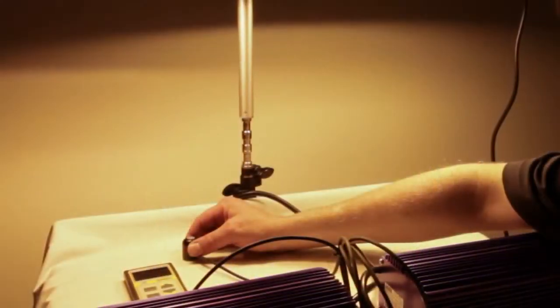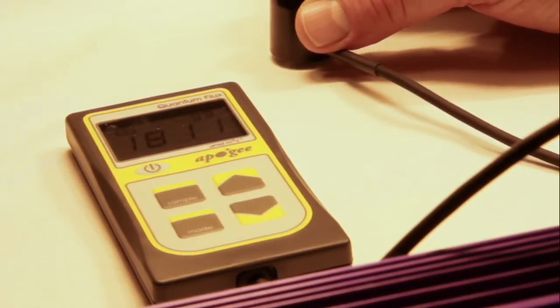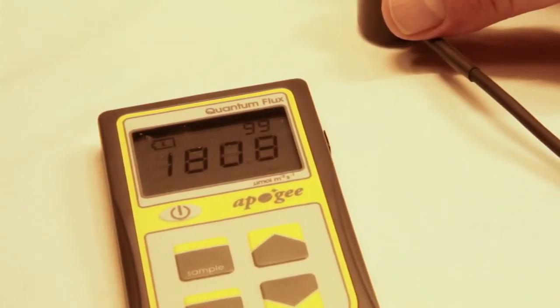And then from the Lumitech Pro 400 volt lamp you can see we are getting just over 1800 micromoles per meter squared per second, around 1810.